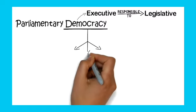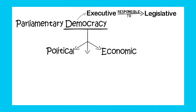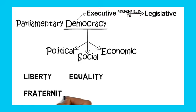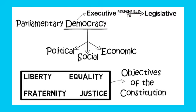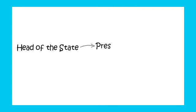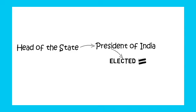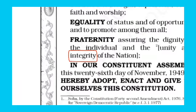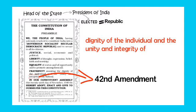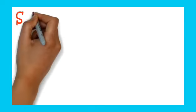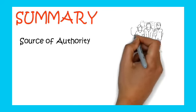In parliamentary democracy, the executive is responsible to the legislature. IAS and IPS officers are responsible to the elected members — MPs in the central government and MLAs in state governments. The head of the state is the President. Our President is Droupadi Murmu, as per the 42nd Amendment.